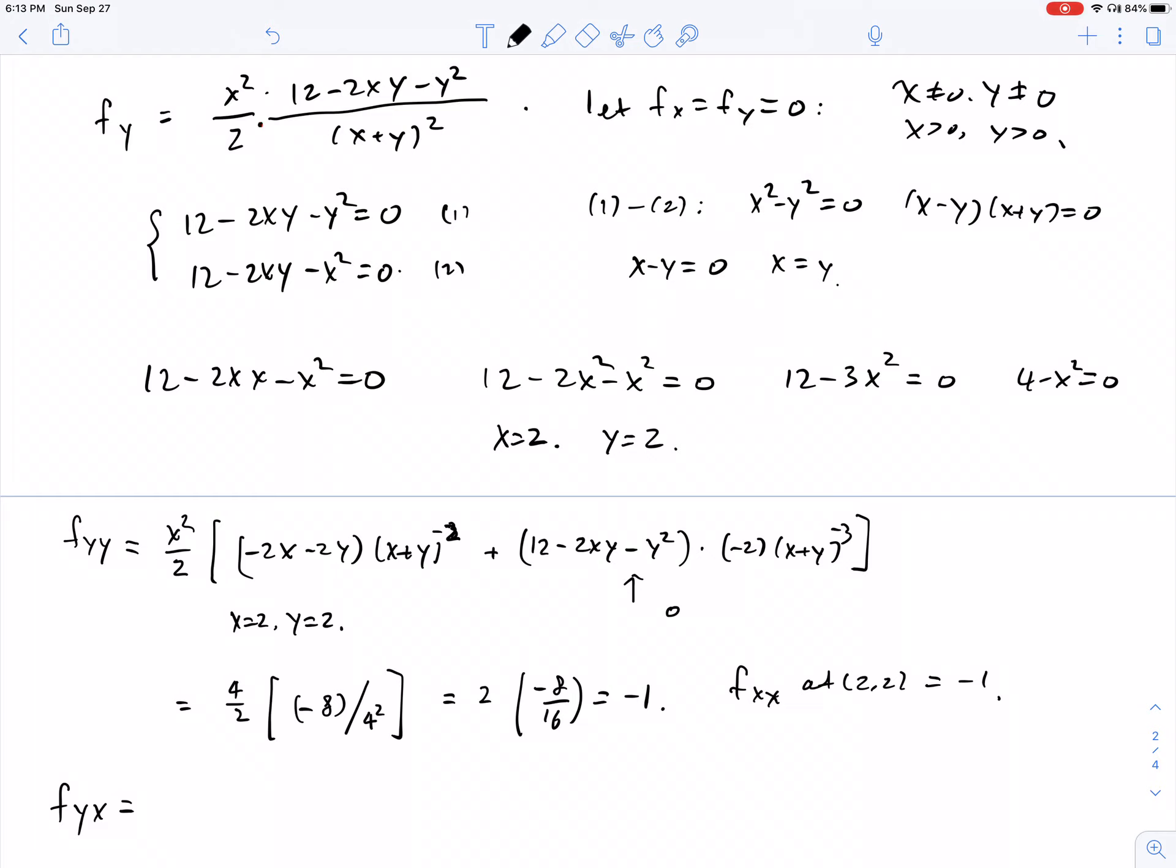So take the derivative of the first factor, we're going to have just x, and then times the second factor, we have 12 minus 2xy minus y squared over x plus y squared. And then we're going to take the derivative of the second term.